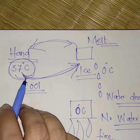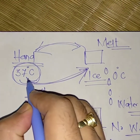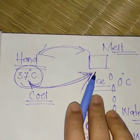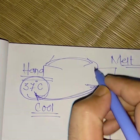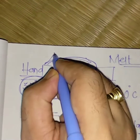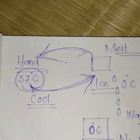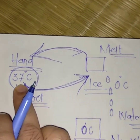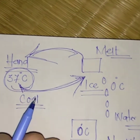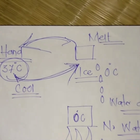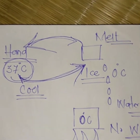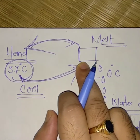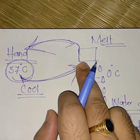Heat energy travels from higher concentration to lower concentration. The hand had more heat, so it moved from the hand to the ice, and the coldness from the ice moved to the hand. So heat is a form of energy which travels from higher concentration to lower concentration.